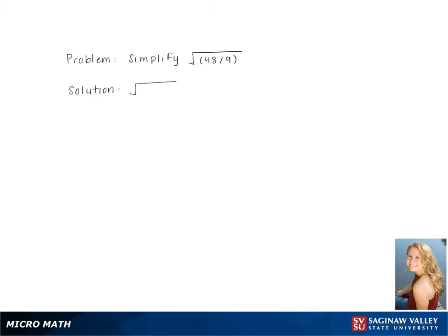To simplify the square root of 48 over 9, we start by rewriting the problem as square root 48 over square root 9, making it easier to simplify.